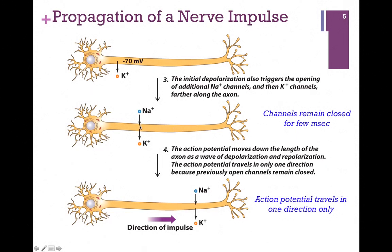This propagates down the entire length of the axon — sodium channels open and close, potassium channels open and close, all the way down. What makes this potential move in only one direction is the fact that after we open those channels and they close, they remain closed for a few milliseconds. That means we can't reopen a channel we've already closed; we can only open one further down the line. This ensures that our action potential moves down to the terminus, so the direction of the impulse is always from the cell body to the axon terminus.